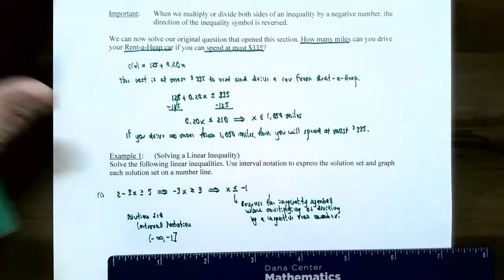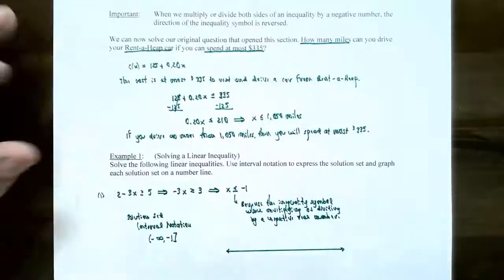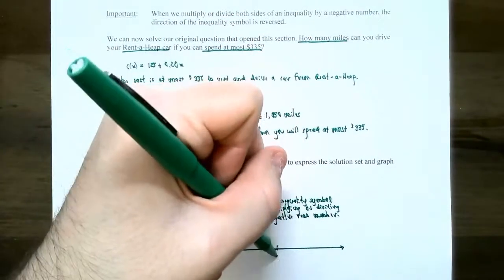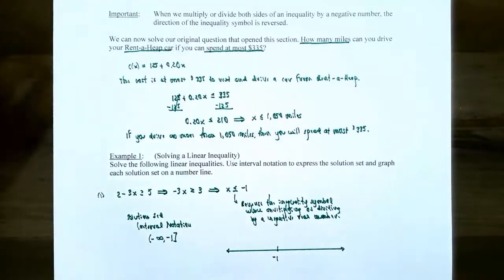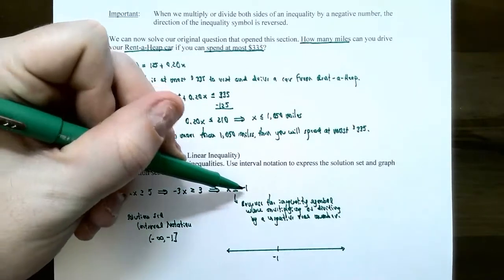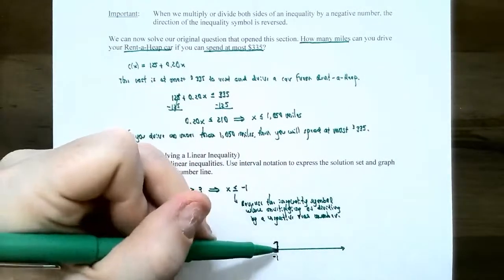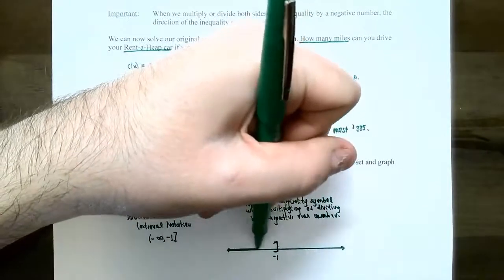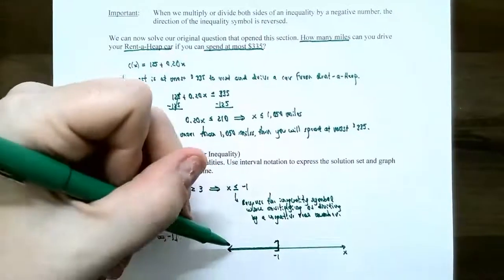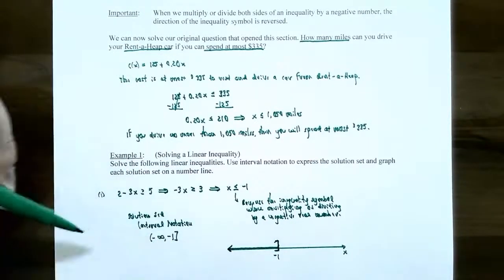It sometimes helps to draw the number line first, then figure out interval notation from it. Place −1 right in the center of the number line. We want x values less than or equal to −1, so use a square bracket at −1 facing to the left, and shade the number line to the left forever toward negative infinity. This represents all x values that are solutions, going from negative infinity up to −1.